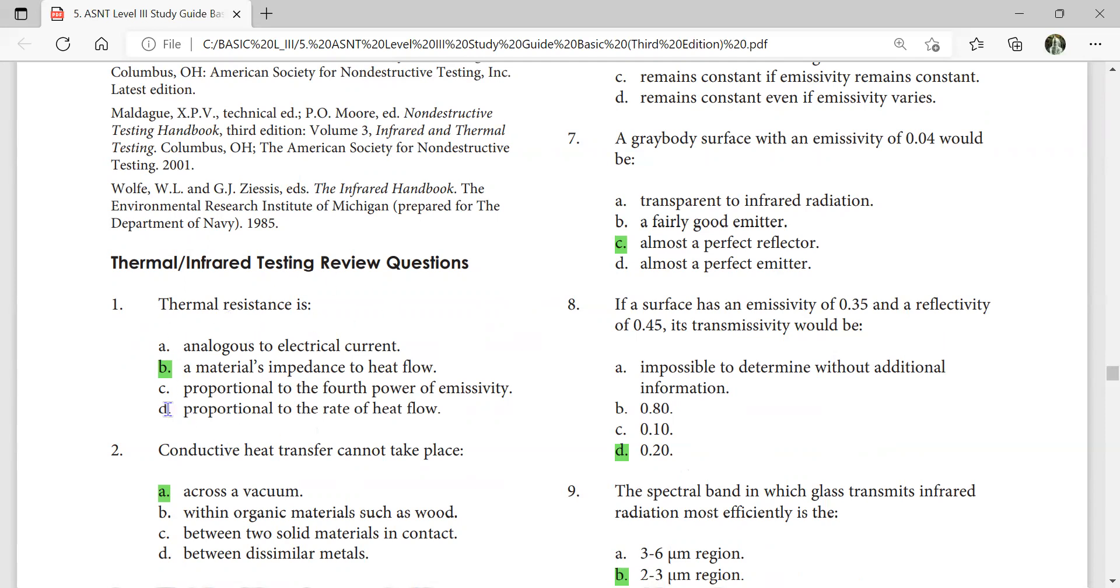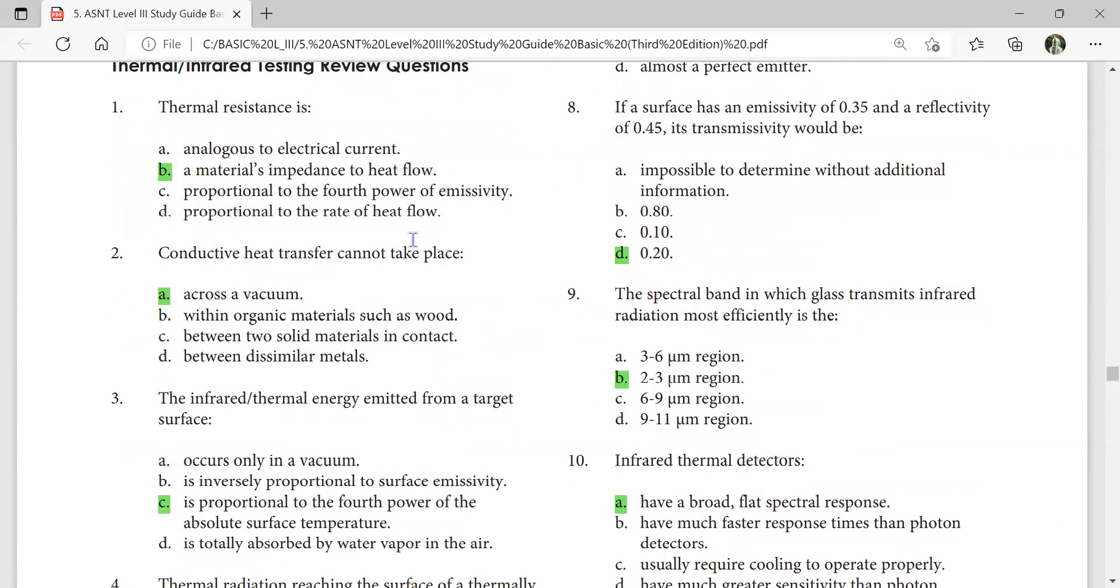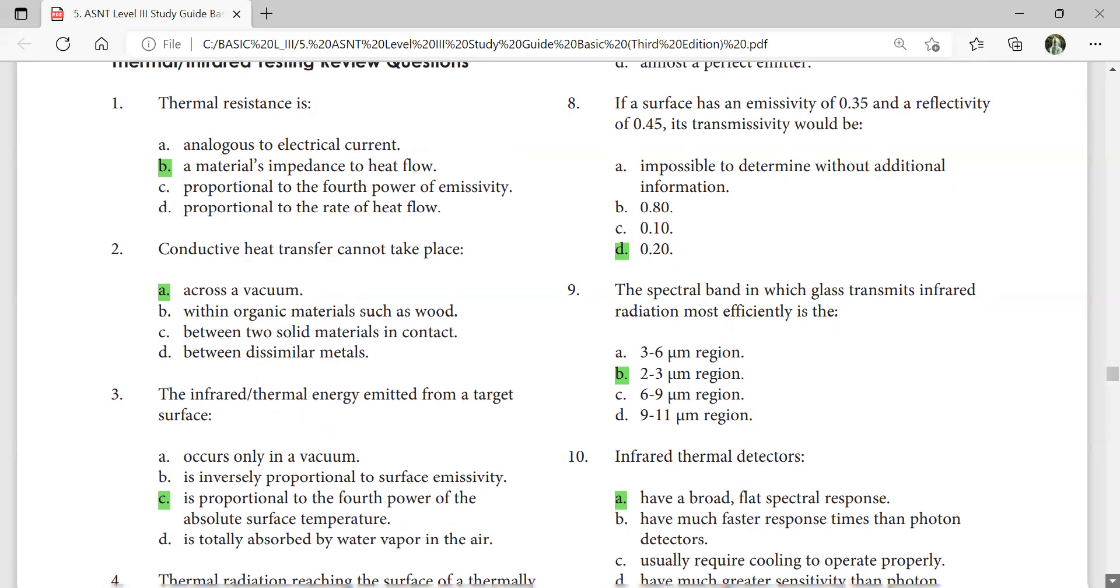Thermal resistance is a material's impedance to heat flow. Conductive heat transfer cannot take place across vacuum. Radiative can. The spectral band in which glass transmits infrared radiation most efficiently is 2 to 3 micrometer region. The infrared thermal energy emitted from a target surface is proportional to the fourth power of absolute surface temperature. Stefan-Boltzmann law. Infrared thermal detection systems have a broad, flat spectral response.